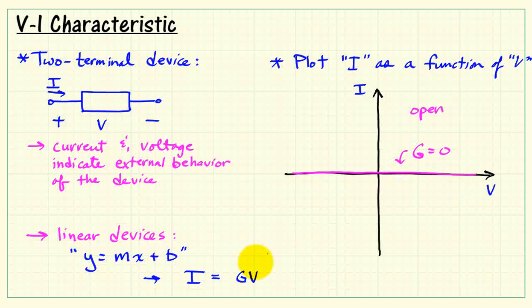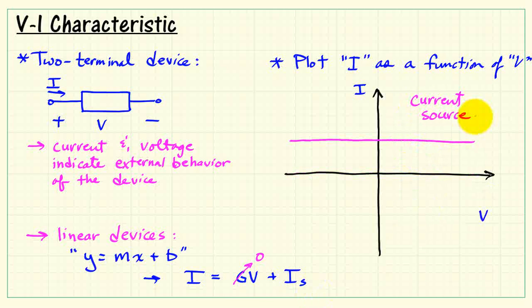Now, let me come back here and go with this idea of zero conductance. And I will then add an offset called I sub S. So that would then lift up this horizontal line, and we would then get the characteristic for an ideal current source.